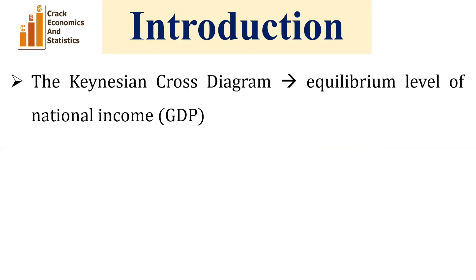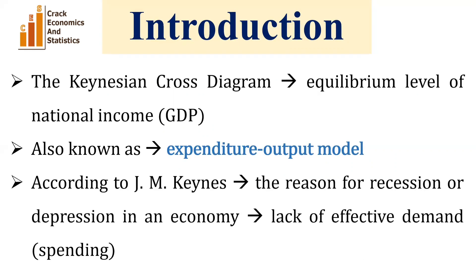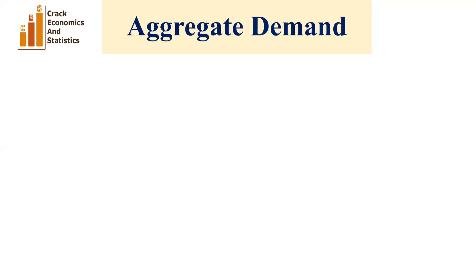The Keynesian cross diagram shows the equilibrium level of national income. It is also known as the expenditure-output model. According to Keynes, the reason for recession or depression in an economy is the lack of effective demand. Now let us understand aggregate demand before we understand the Keynesian cross.